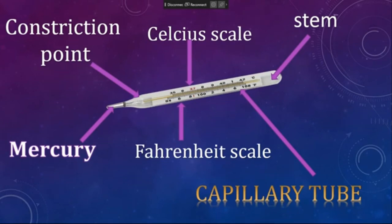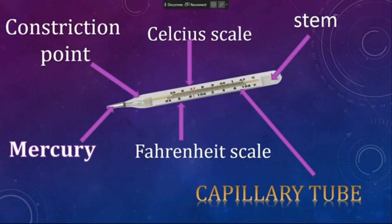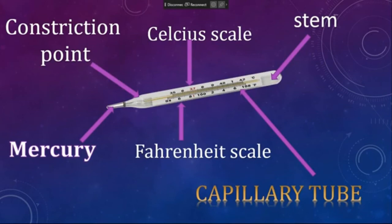A clinical thermometer can measure from 35°C to 42°C and 94°F to 108°F. In the comment box, tell me what is the normal body temperature of a human being in both Celsius and Fahrenheit. The thermometer is mainly made up of mercury, a capillary tube, and a stem. The Celsius and Fahrenheit scales show temperature deflection through mercury. Mercury is a metal in liquid state. When mercury absorbs heat from our body, it expands and increases in volume through the capillary tube, indicating body temperature on both Celsius and Fahrenheit scales.